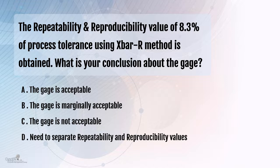On the contrary, if this value is anywhere between 10 to 30%, then the gauge is marginally acceptable, which means we have to cautiously proceed, but we can still continue to use the gauge.